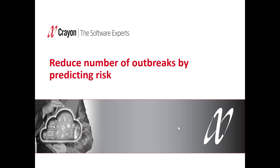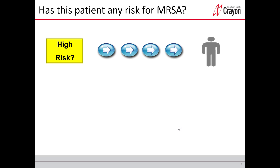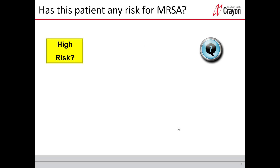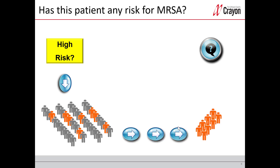So let's start with the first case — reducing the number of outbreaks by predicting risk. I wonder if this patient has a risk for this virus. With statistics, you can use historical information, and here we could find that the red group is the one with the disease. I wonder what kind of characteristics these people have and how they differ from the rest who are more healthy. I can use this information to find out if this patient has almost the same characteristics, and then we can have a score — like an 80% score — that tells us this person has an 80% risk of getting this virus.